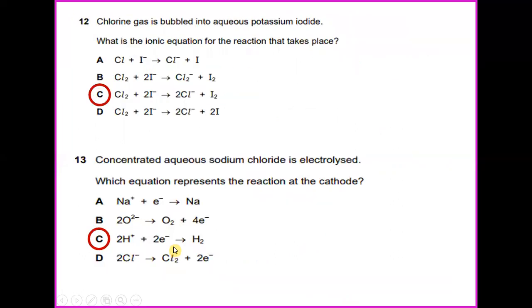Chlorine gas is bubbled into aqueous potassium iodide. What is the ionic equation for the reaction that takes place? There will be 2I minus plus Cl2 to form 2Cl minus plus I2. So the answer would be C.